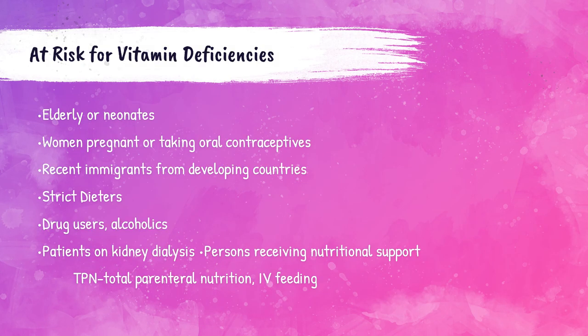There are a variety of at-risk patients for becoming deficient in vitamins. Neonates — newborn babies — and the elderly are at more risk for deficiencies. Pregnant women or those taking oral contraceptives are also at risk. The fetus in pregnant women uses a lot of resources from the mother, and some birth control pills have been shown to deplete some vitamins. Incoming immigrants from developing countries can also be depleted of vitamins due to improper nutrients in food. Patients who are strict dieters not eating a balanced meal can also be vitamin deficient. Chronic drug users and alcoholics have a tendency to be deficient in vitamins as well.